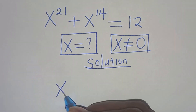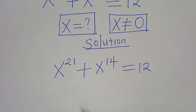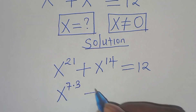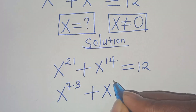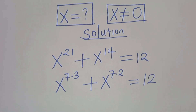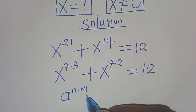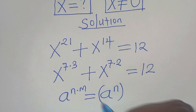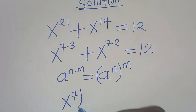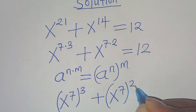We have x to the power of 21 plus x to the power of 14 equals 12. We can express x to the power of 21 as x to the power of 7 times 3, and x to the power of 14 as x to the power of 7 times 2. Applying the exponent property — a to the power of n times m equals a to the power of n raised to the power of m — we get x to the power of 7 raised to the power of 3, plus x to the power of 7 raised to the power of 2, equals 12.